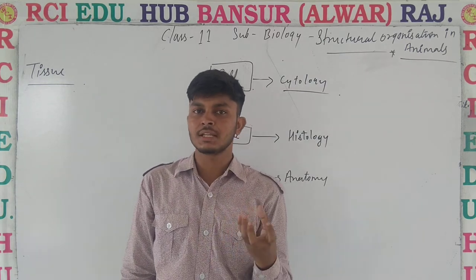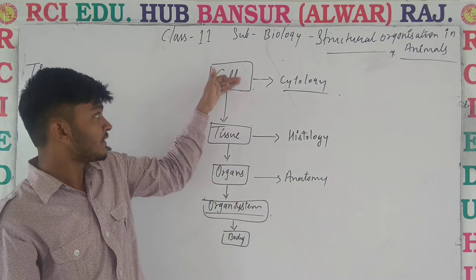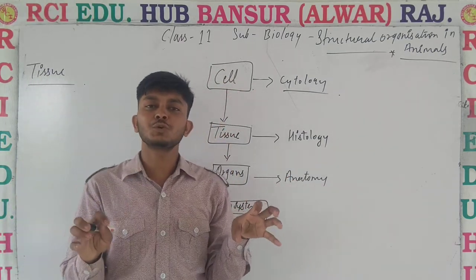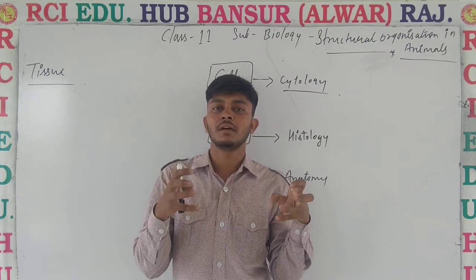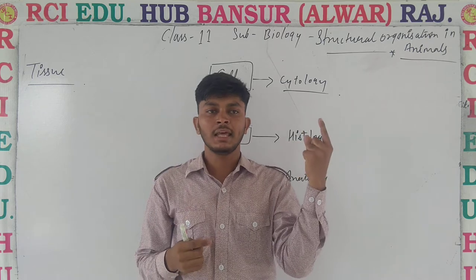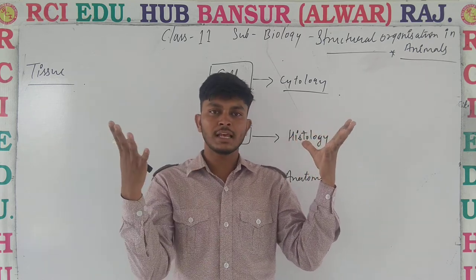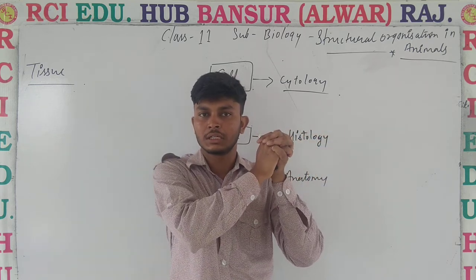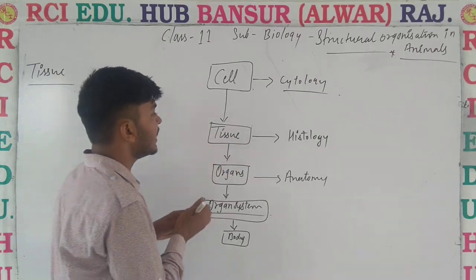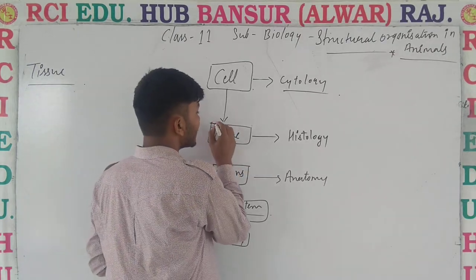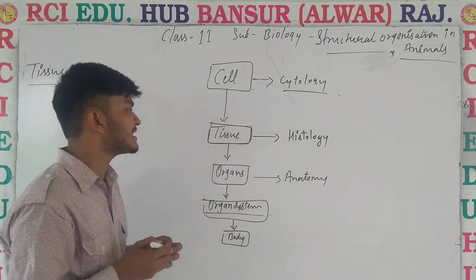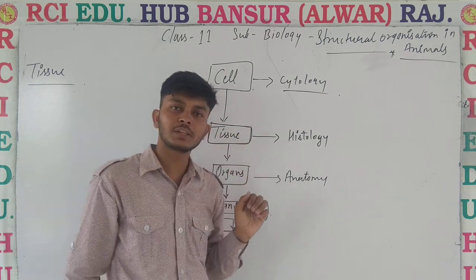The cell is the unit of life and the study of cell is known as cytology. Both cells which are grouped together perform a particular function — like this one is a cell, these all are cells grouped together. Groups have been created and they perform a particular function, and that structure is known as tissue.